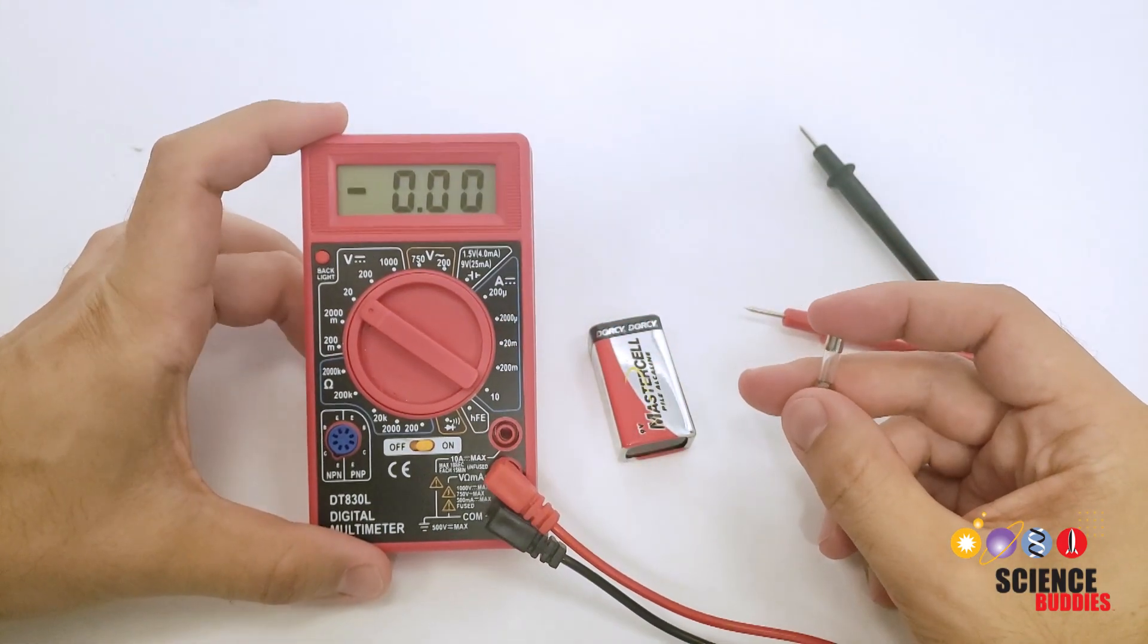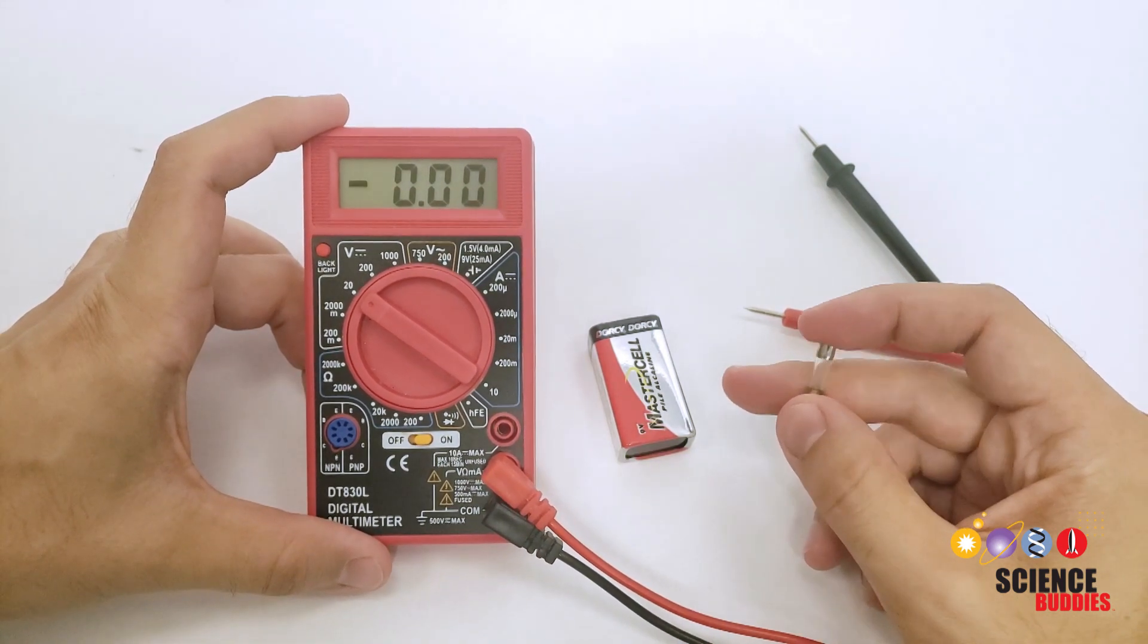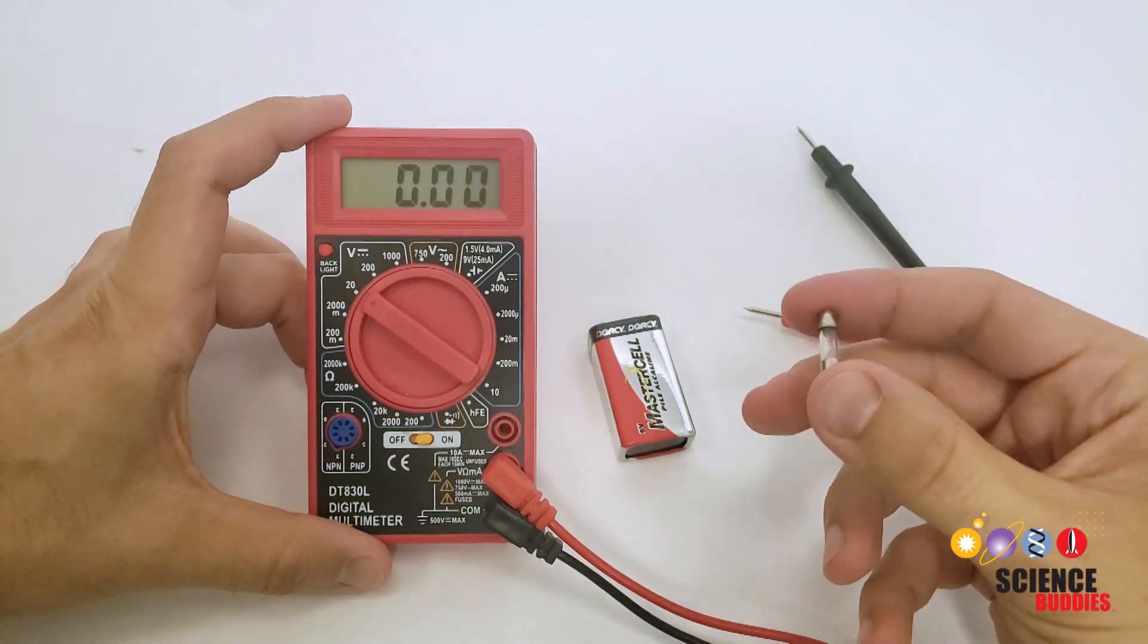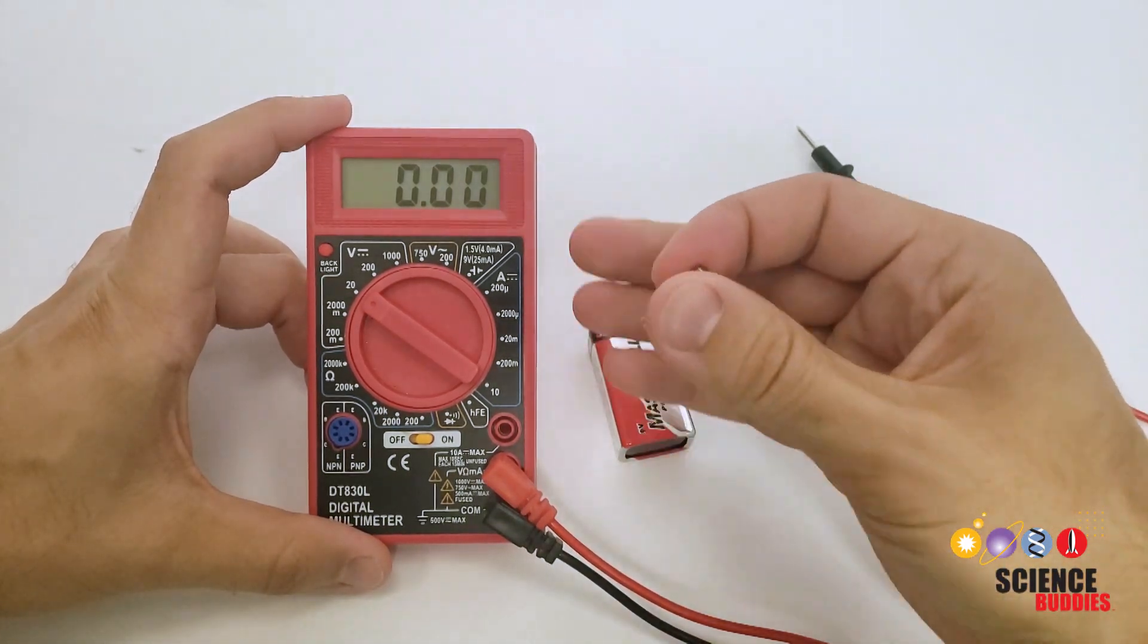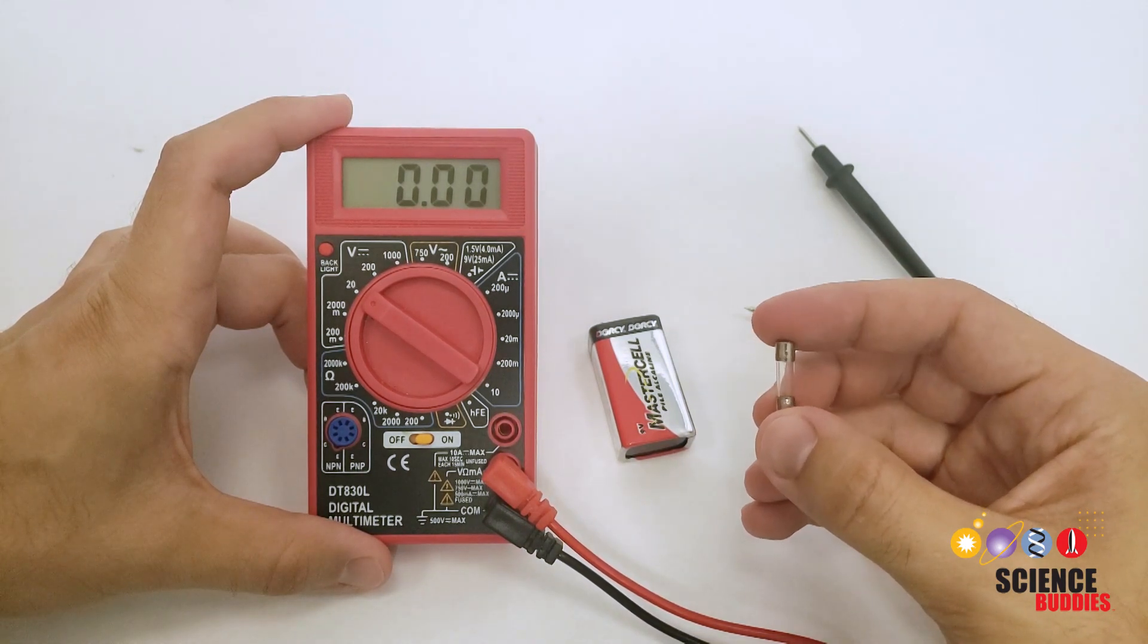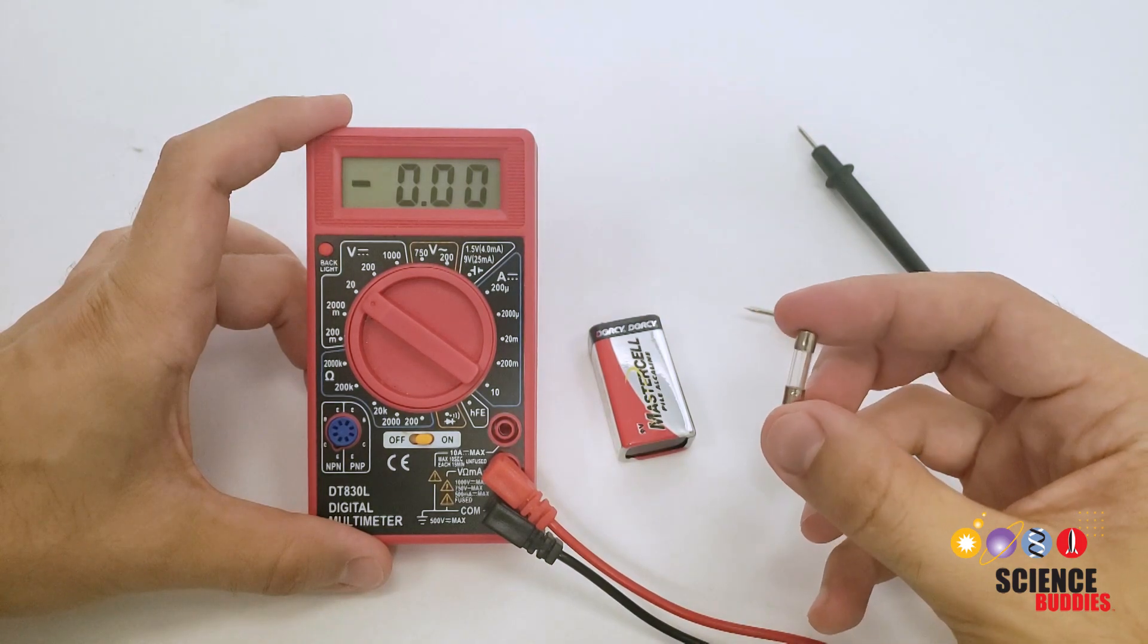Here at Science Buddies we have a lot of science projects where students need to use a multimeter, and one of the most common problems we encounter is that students will connect things incorrectly, accidentally blow the fuse, then always have their multimeter read zero when they try to take a measurement and not understand why. So in this video I will walk you through that process and explain how you can replace the fuse.